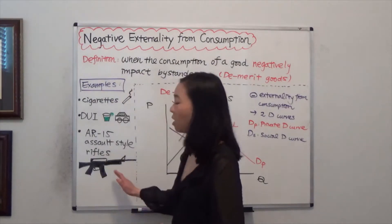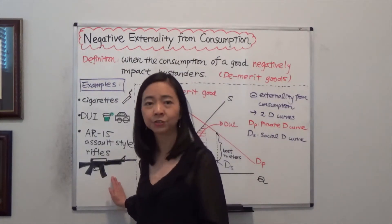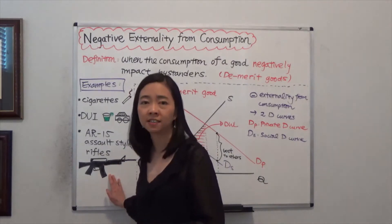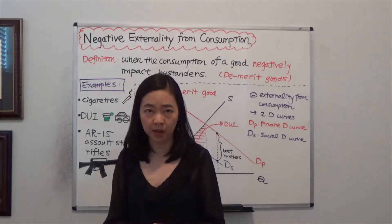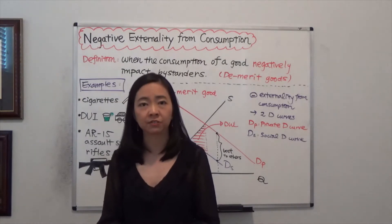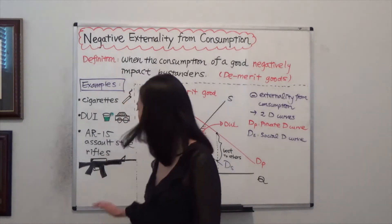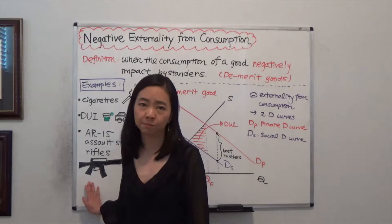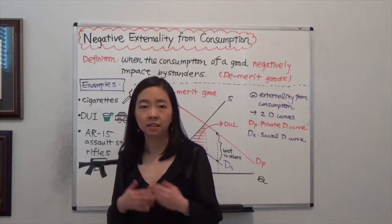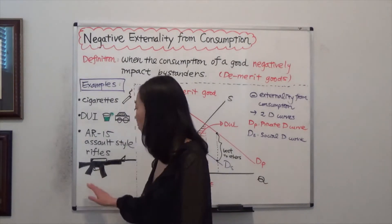Finally, AR-15 assault style rifles. This style of rifle is designed to kill as many people as possible in the shortest amount of time. Typically, this kind of rifle is only in the military. But in the United States, anyone, a civilian, can get a hold of this.